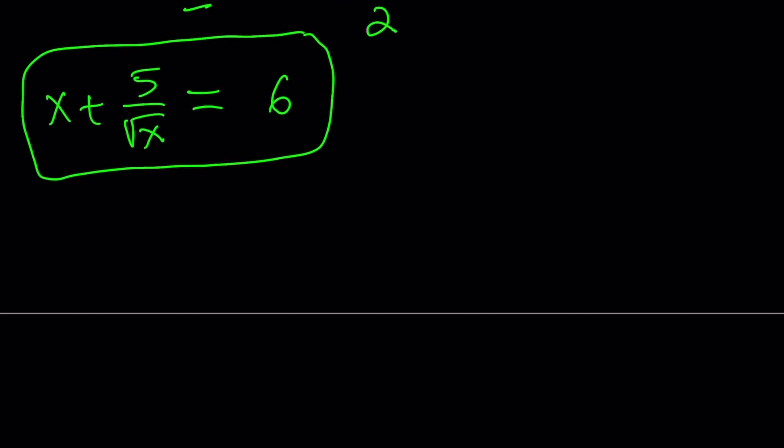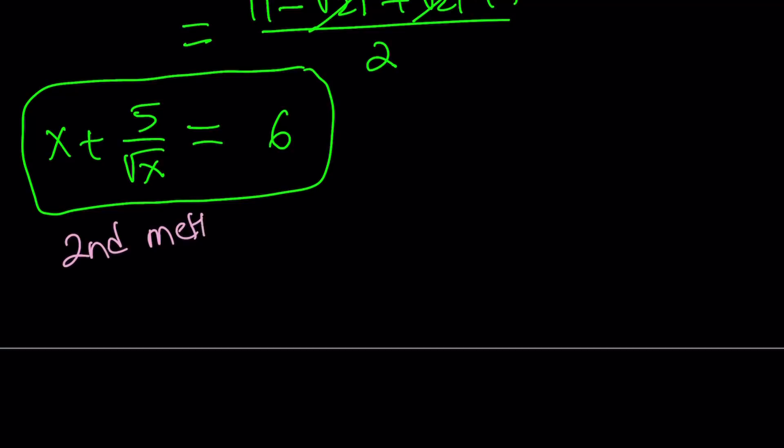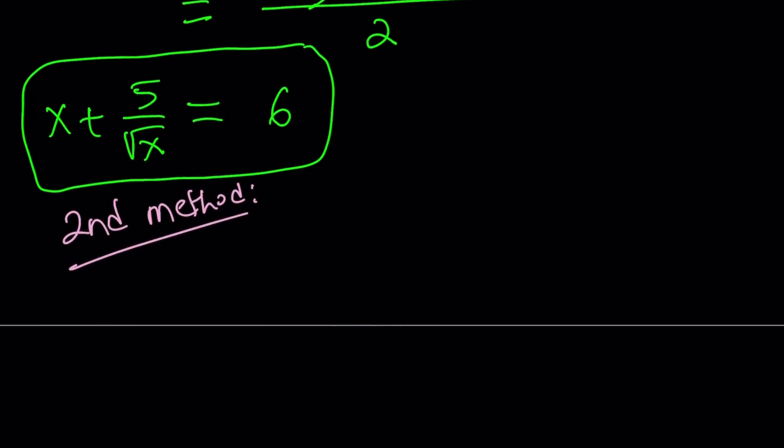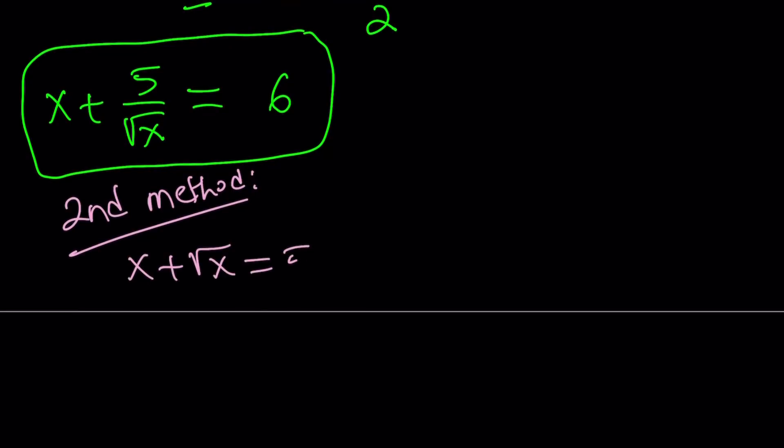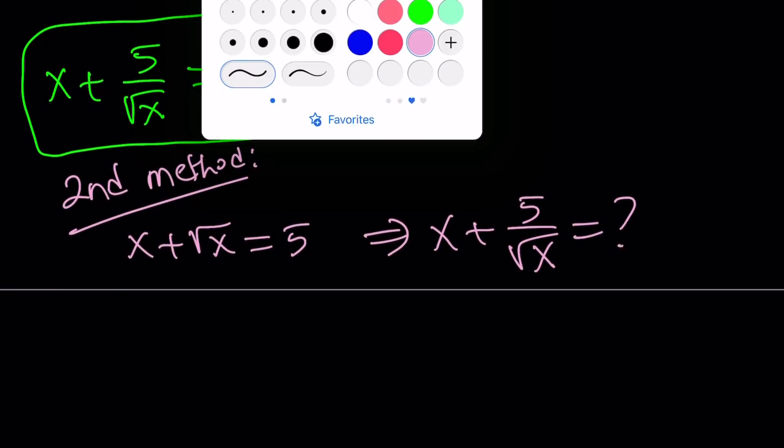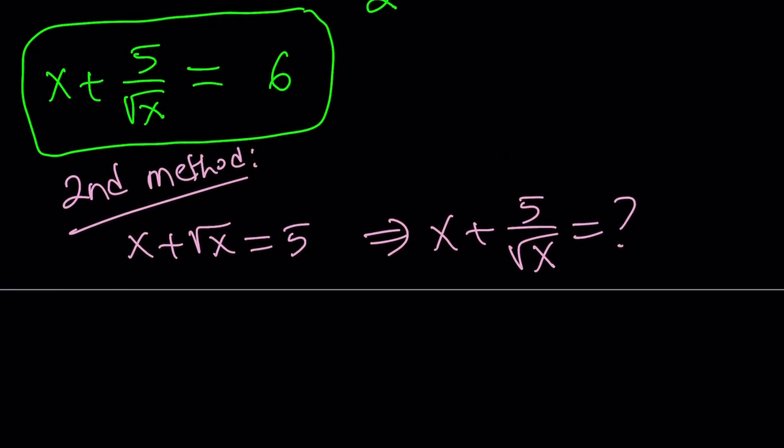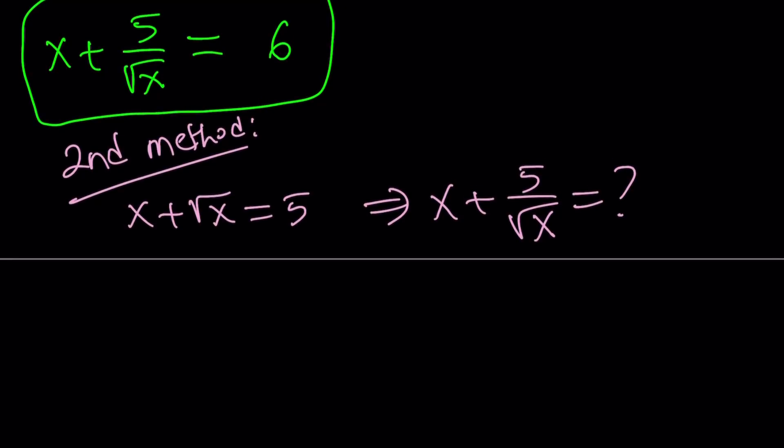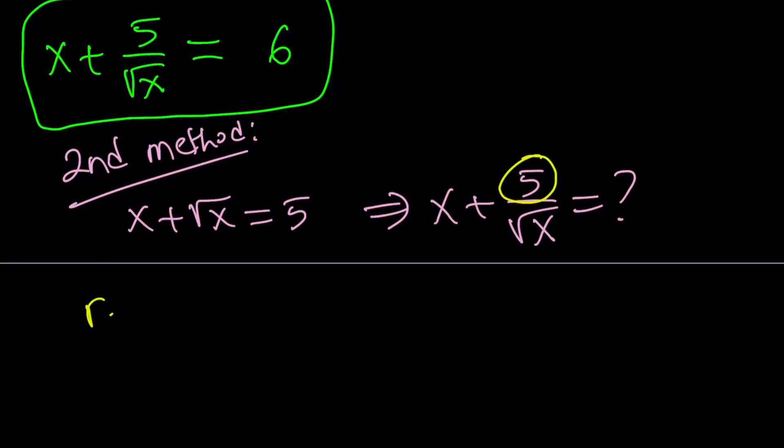Let's go ahead and use the second method and see what that looks like and see if we can find the exact same value. Obviously, the second method is going to be nicer. And hopefully, you can call this more elegant. We're given x plus root x equals 5, and we're supposed to evaluate x plus 5 over root x. I'm going to be doing something interesting here. Usually, we replace variables with numbers. But how about replacing a number with a variable? In this case, in our expression, we're going to replace 5 with x plus root x.